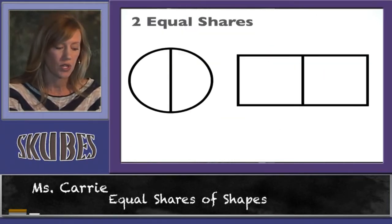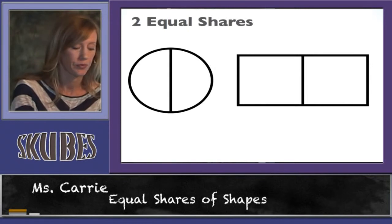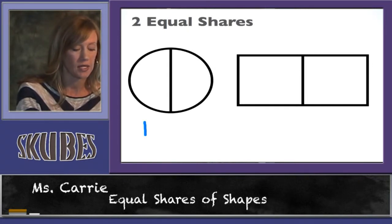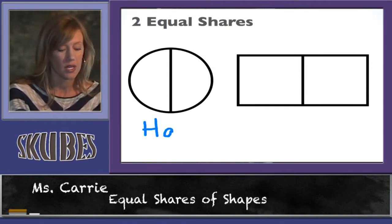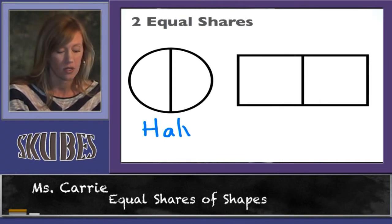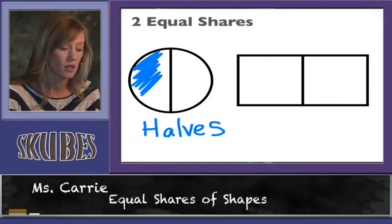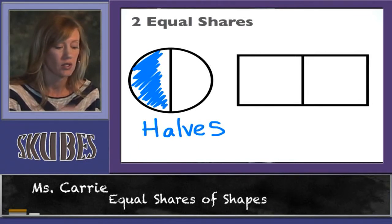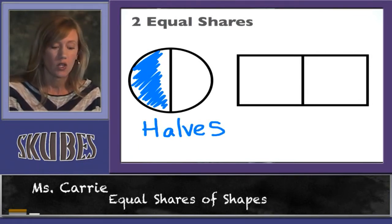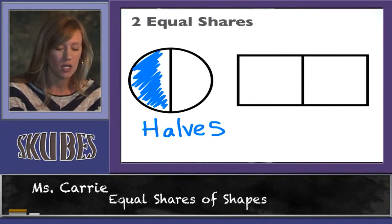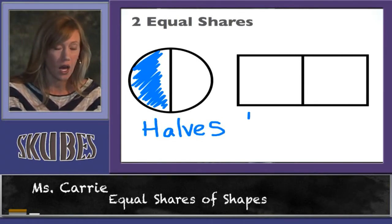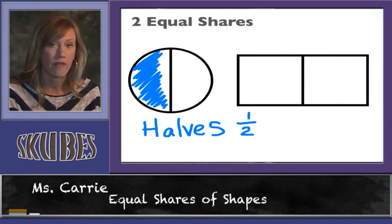Now with two equal shares, you have two pieces. And each piece is a half. So these are halves. Both of these shapes are cut in half. If I decided I wanted to color in one of the parts, I would have colored one half. And the way we write that as a fraction is one. That's the one piece we colored. Draw a line out of two. So that's one half of that circle.